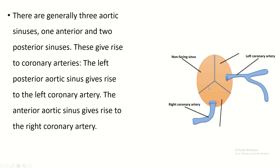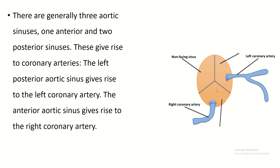The aortic sinuses are three in number. This is the anterior aortic sinus, and these two are the posterior aortic sinuses. This aortic sinus is known as the left posterior aortic sinus, and this is the right posterior aortic sinus. From the anterior aortic sinus, the right coronary artery arises. From the left posterior aortic sinus, the left coronary artery arises. The right posterior aortic sinus is also known as the non-coronary sinus.